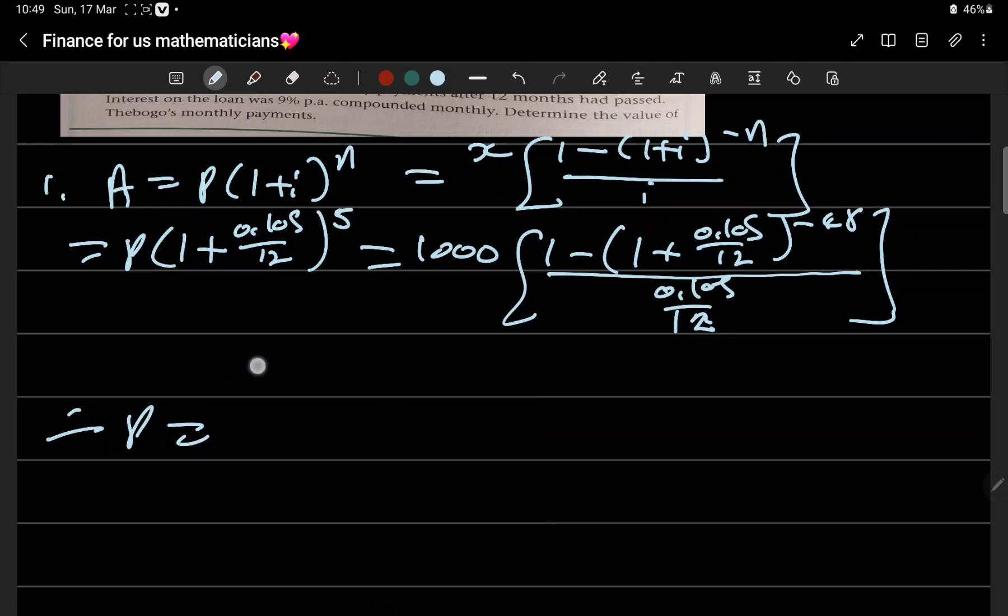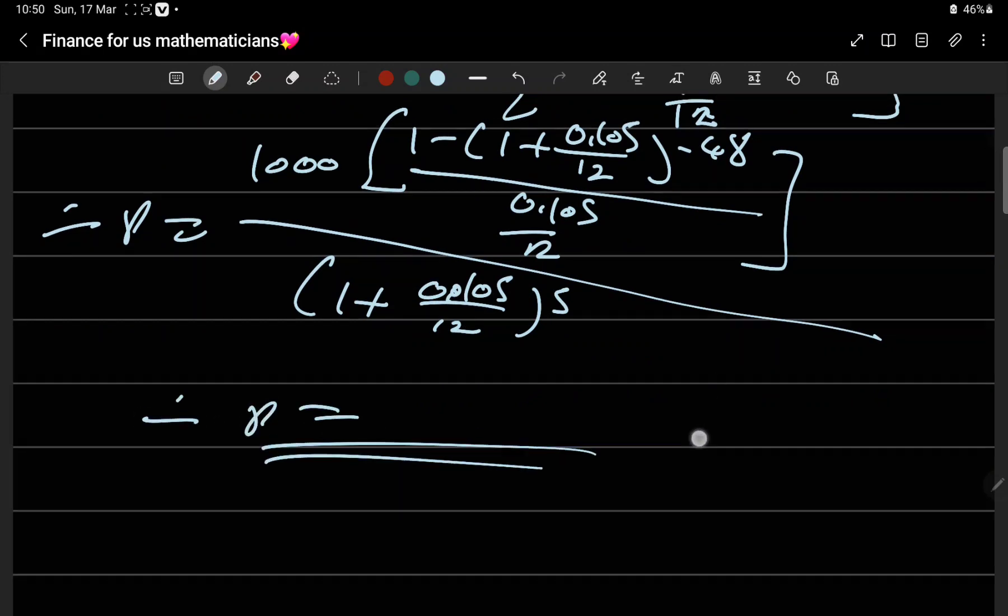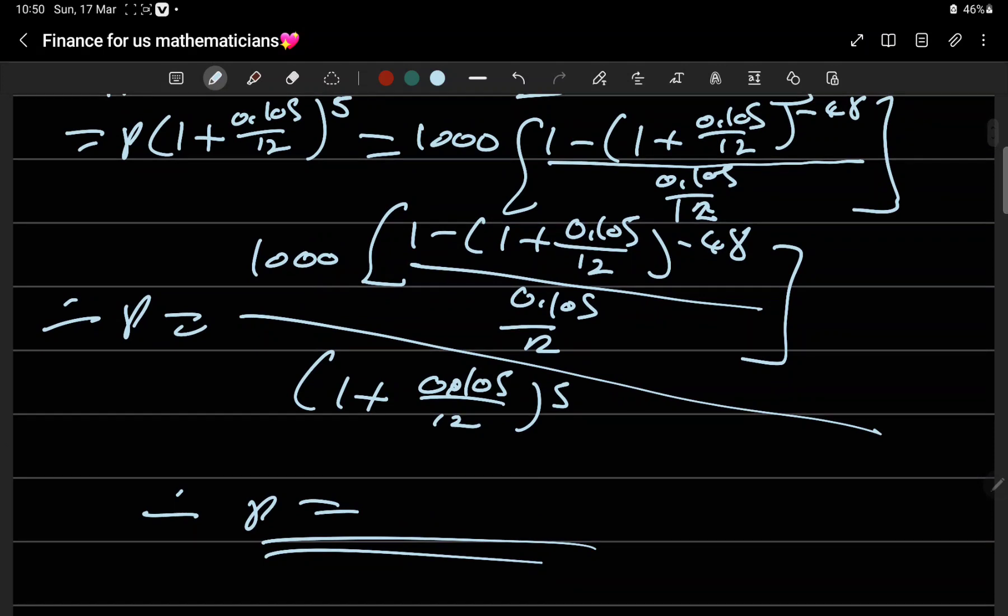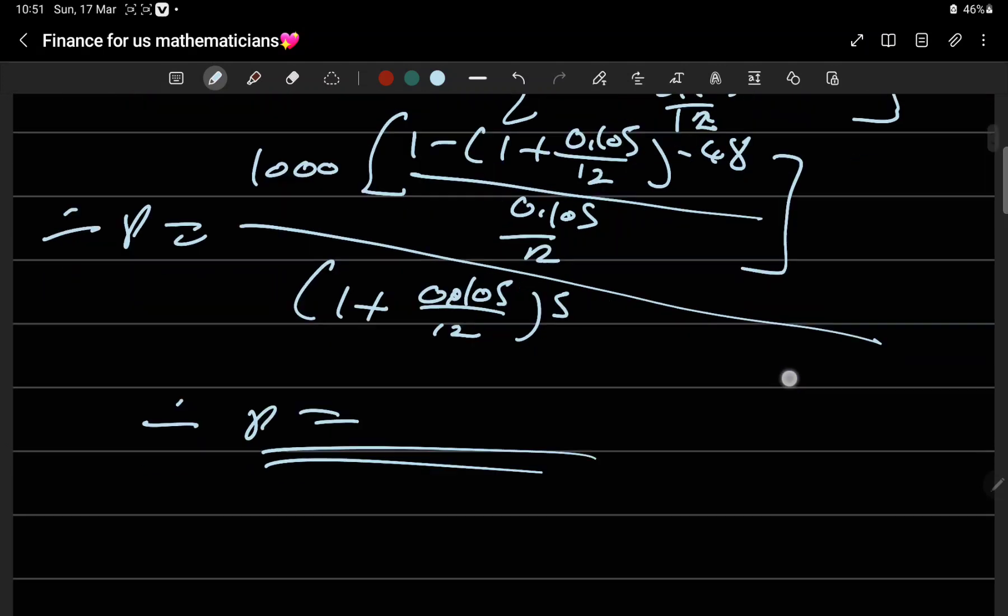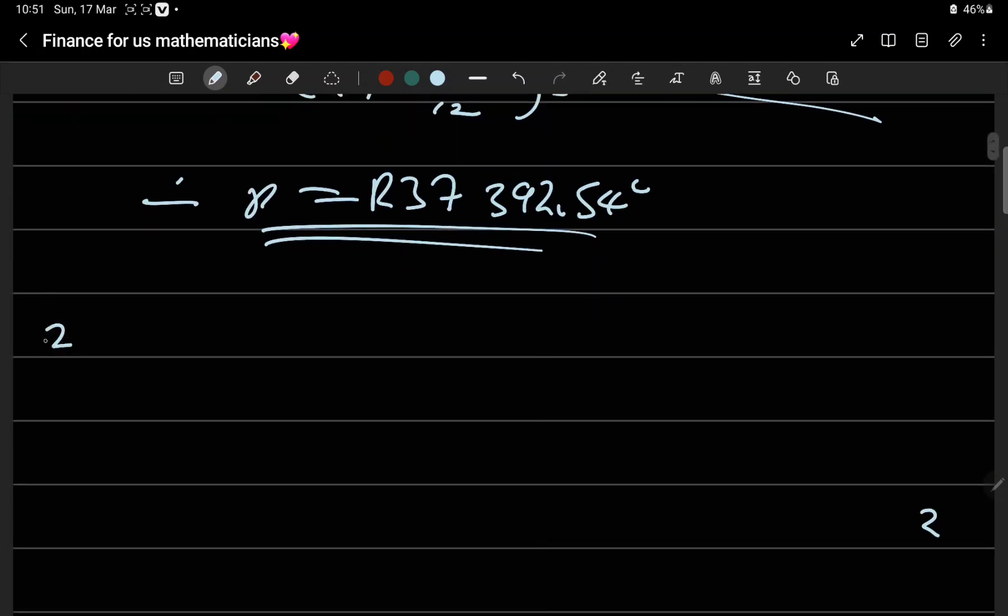So P equals 1000 times [1 minus (1 plus 0.105/12)^(-48)] over (0.105/12), all divided by (1 plus 0.105/12)^5. Let's press our calculators. From the calculator you get 37,392.54 cents.